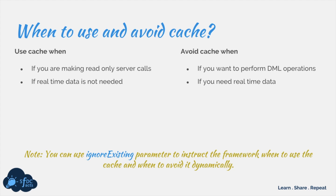You can always control the cache mechanism by using the ignoreExisting parameter, which is part of the setStorable method. If you want to control the cache mechanism dynamically within your code, just use this parameter in your setStorable function and you should be able to control the cache mechanism there.